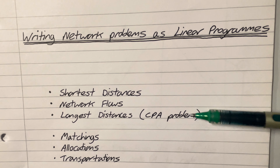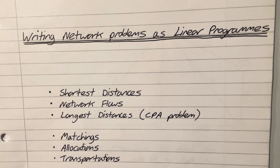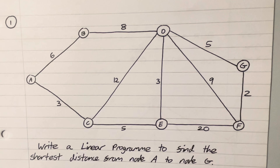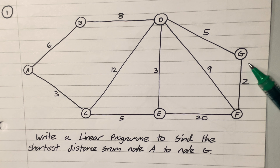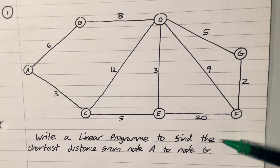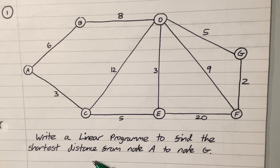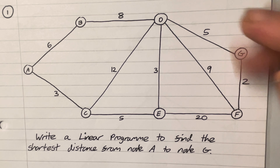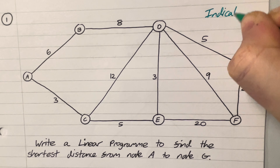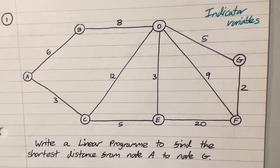Today's video, though, we're just going to focus on writing the linear program for these three problems. The first problem is shortest distances. We have a network and we want to find the shortest distance from A to G. We would use Dijkstra's algorithm usually to solve this problem, but today we're going to write a linear program instead. We're going to introduce indicator variables — variables that are either 1 or 0. A 1 means we are using the arc it represents, and a 0 means we are not.